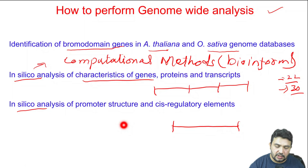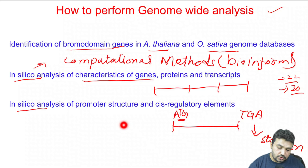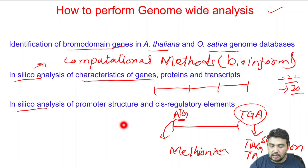We also perform in silico analysis of the promoter structure. As we know, a gene usually starts with ATG and ends with TGA — the stop codon. ATG codes for methionine, so every protein starts with methionine. There is a stop signal which can be TGA, TAG, or TGA — these three codons can be used as stop codons.